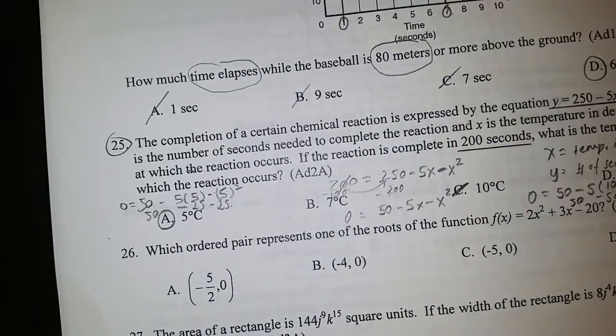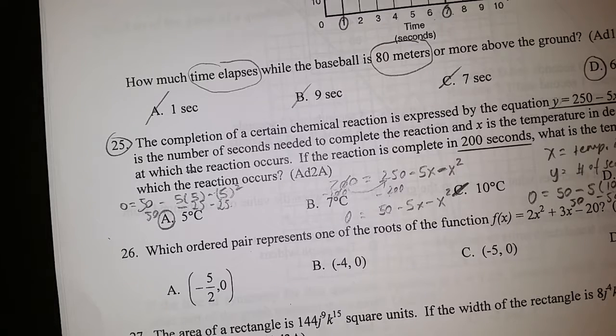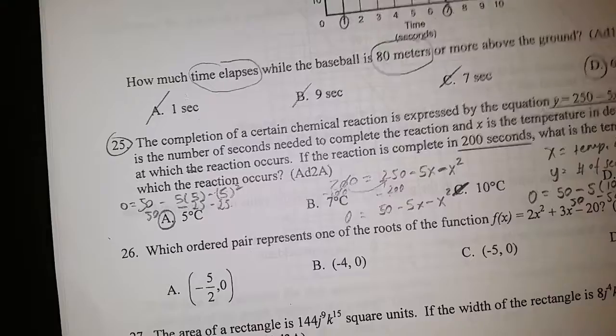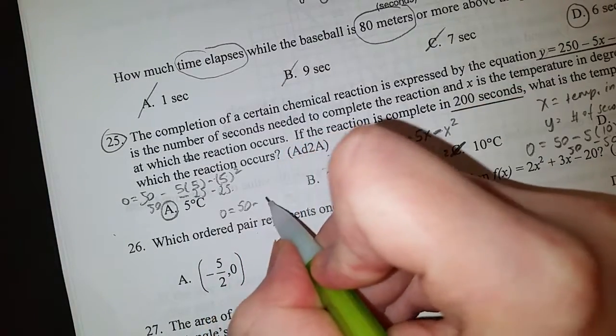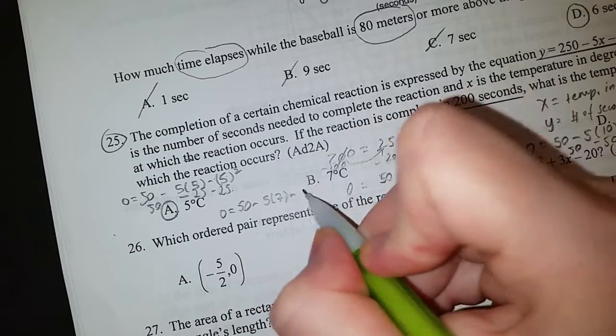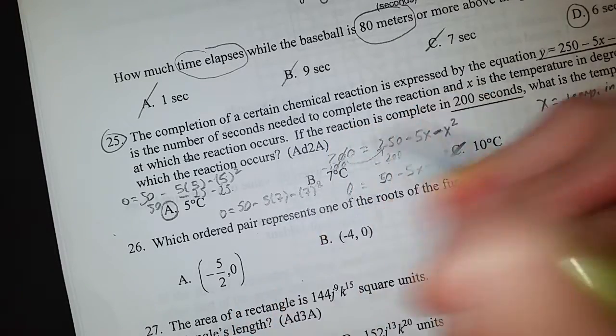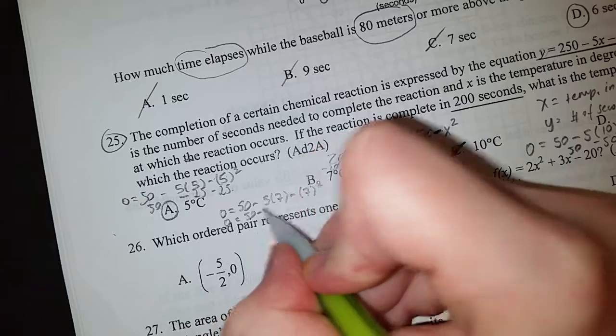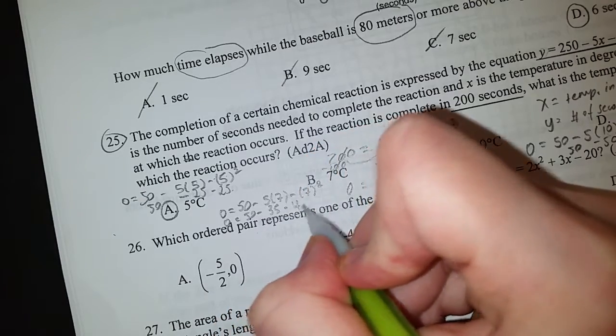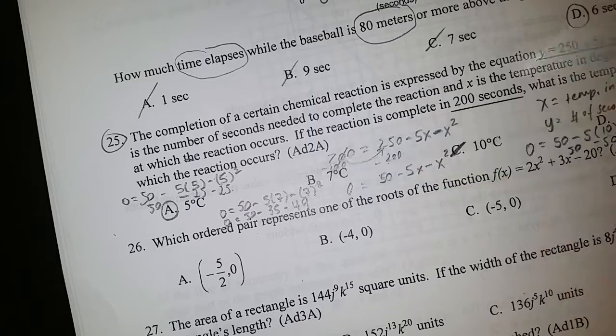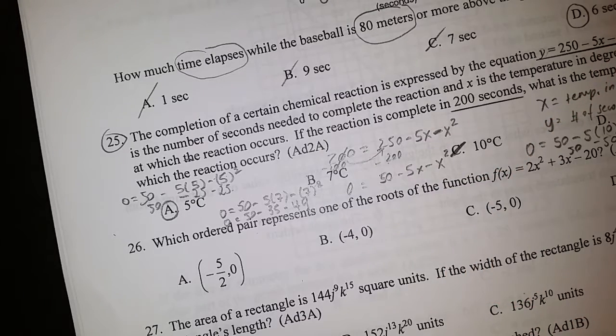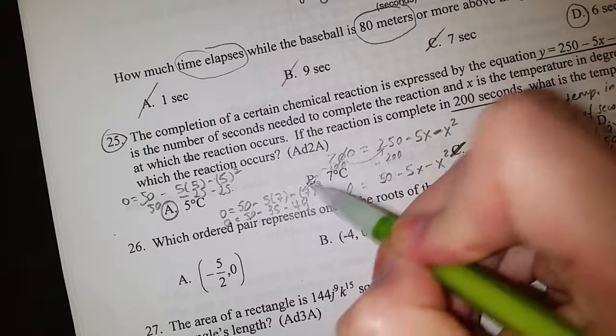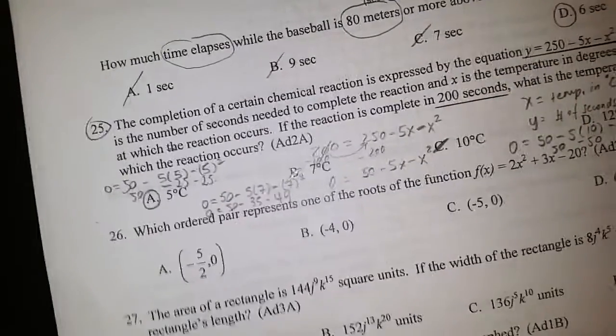Let's check the other answers just for the heck of it. Now we're going to do B, plugging in 7 for x. As you can see, this is definitely not going to give me 0. 50 - 35 - 49 is actually going to give me a negative number, so B is not an option. Let's check D real quick.